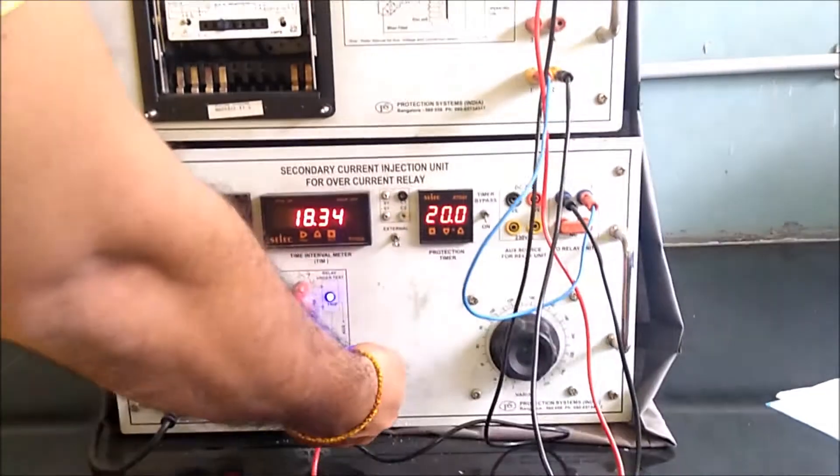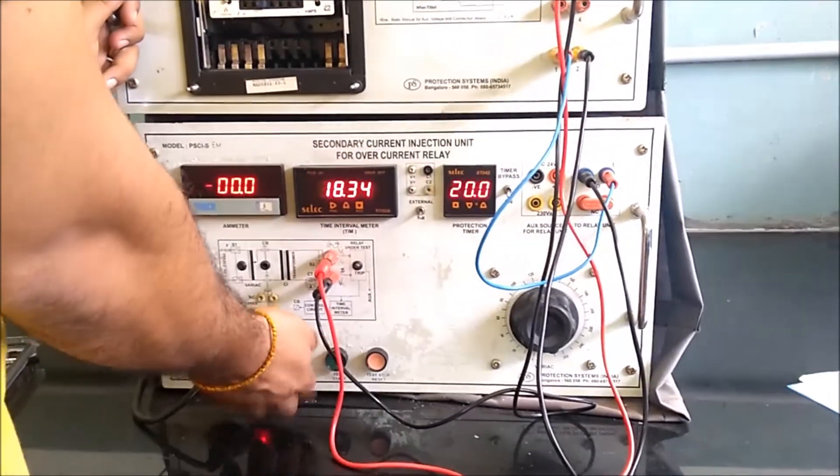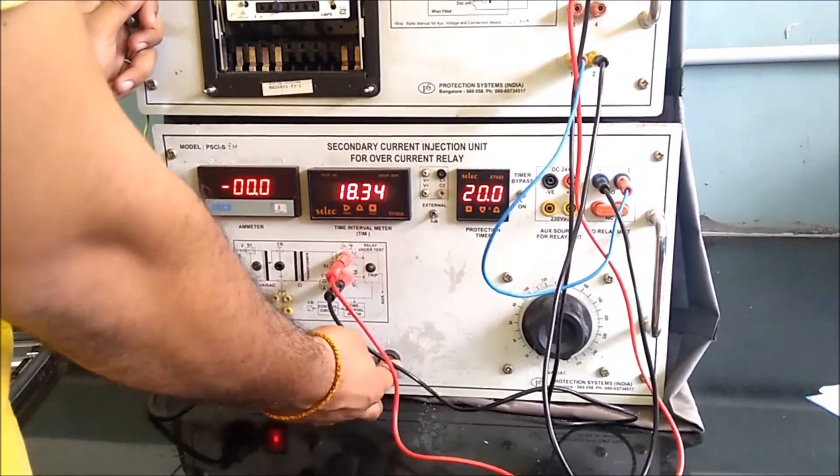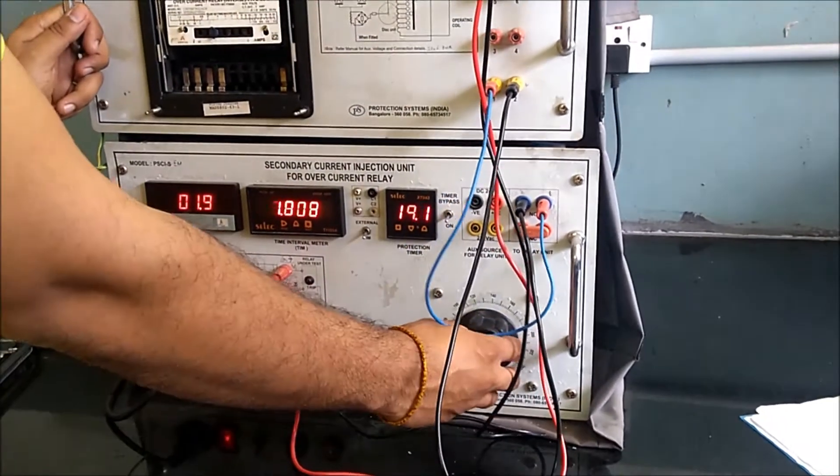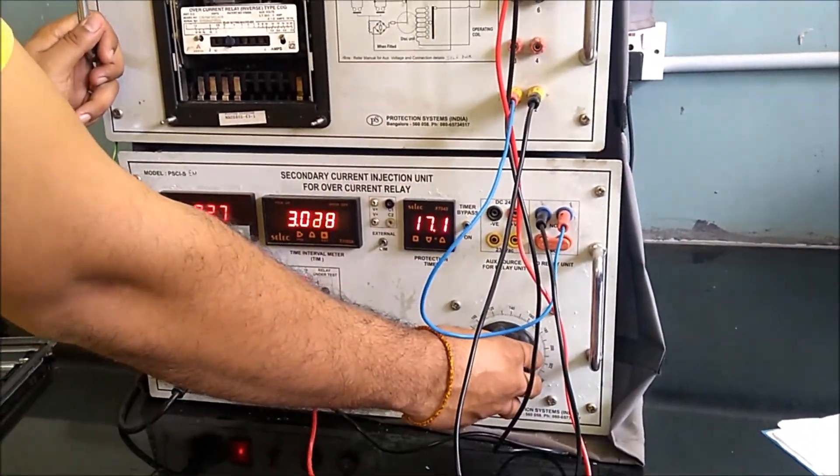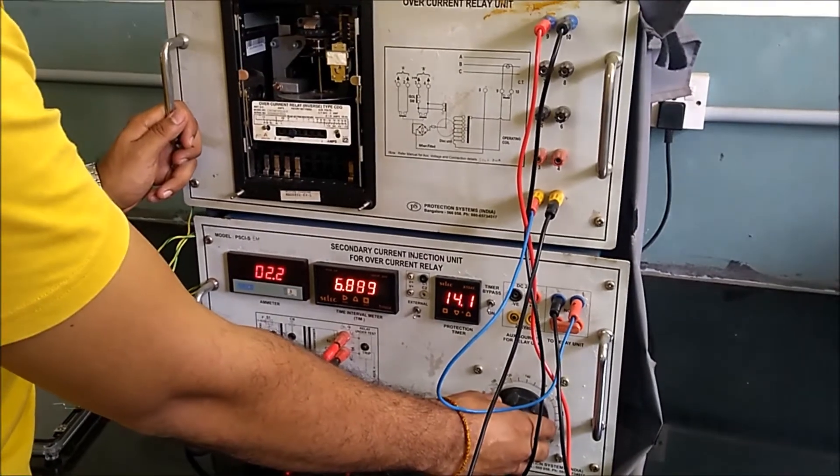Once again keep the testing kit in the set mode and let us set some other value of current. Now we are setting approximately 2 amperes of current.